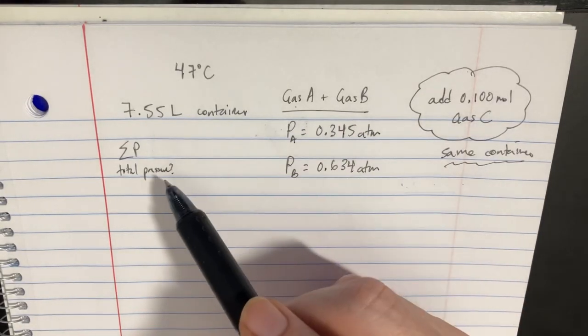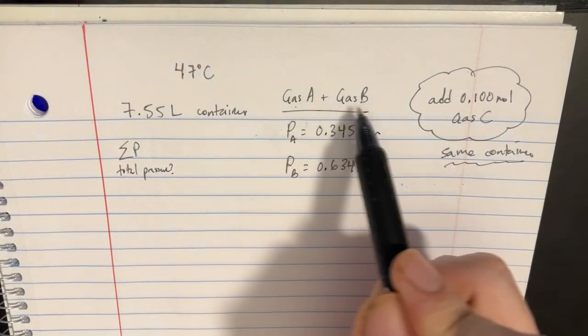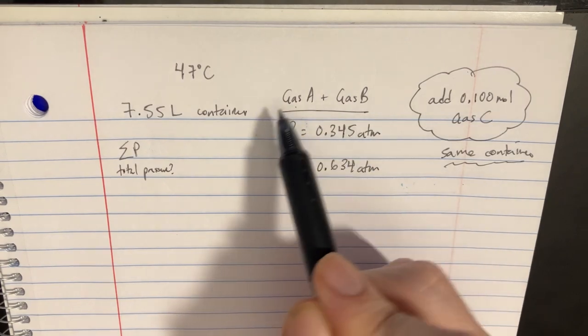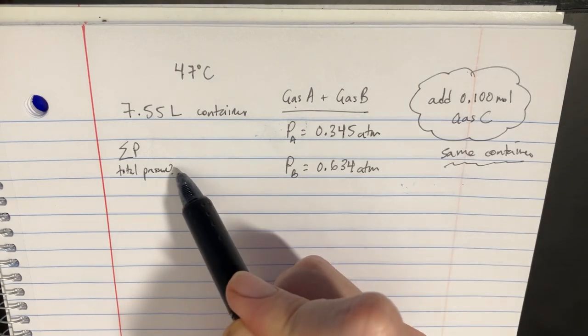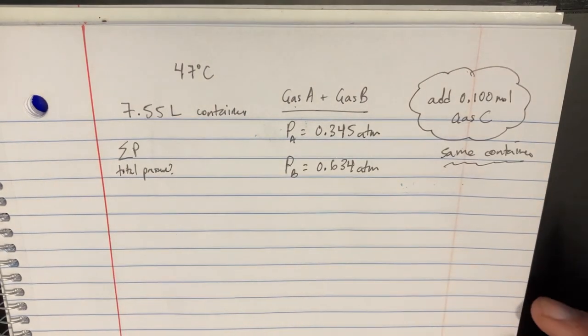We're trying to put a bunch of gases into the same container. First we've got gas A and gas B which gives a certain amount of partial pressures in there. And then we're going to try to add gas C into the same container and we want to know what the total pressure of everything is.